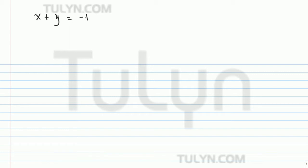Say I give you the system of equations: x plus y is equal to negative 1; 2x minus z is equal to 3; and y plus 2z is equal to negative 1.